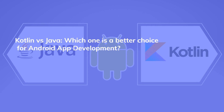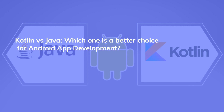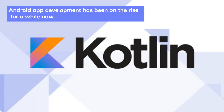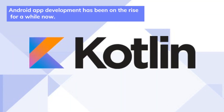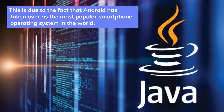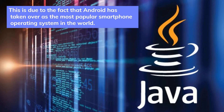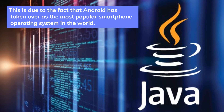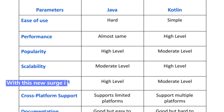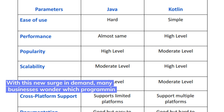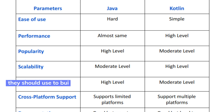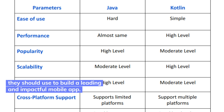Kotlin versus Java — which one is a better choice for Android app development? Android app development has been on the rise for a while now. This is due to the fact that Android has taken over as the most popular smartphone operating system in the world. With this new surge in demand, many businesses wonder which programming language they should use to build a leading and impactful mobile app.